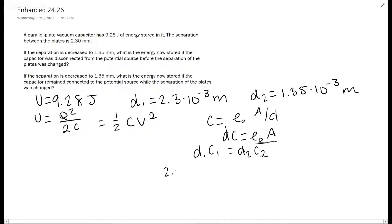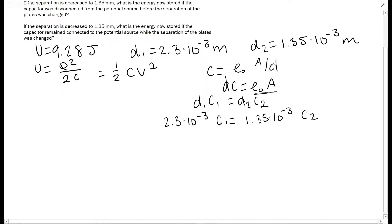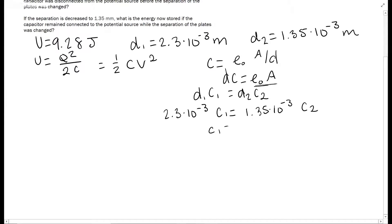So 2.3 times 10 to the negative third C₁ equals 1.35 times 10 to the negative third C₂. And we're going to go ahead and divide those and get C₁ equals 0.587 C₂, which is also equal to C₂ equals 1.7037 C₁.